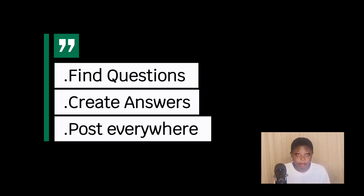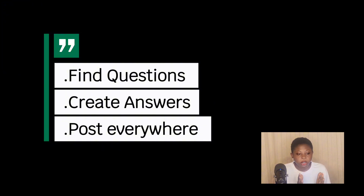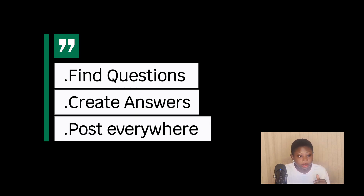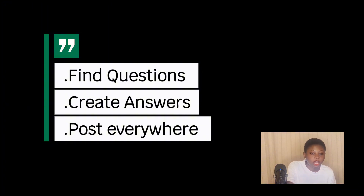The three steps are: one — find questions; two — create answers; and three — post everywhere to distribute across search, social, video, and podcast channels to create multi-channel organic traffic and maximize your reach.